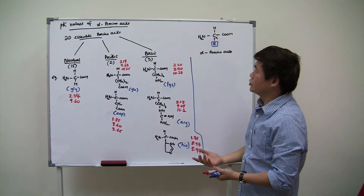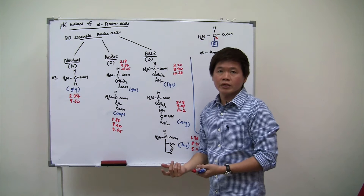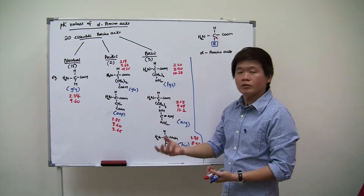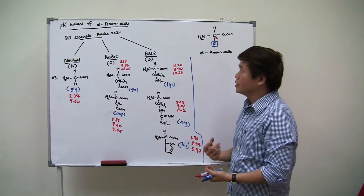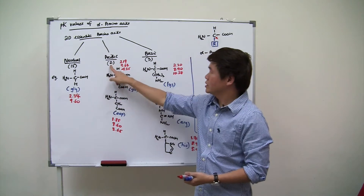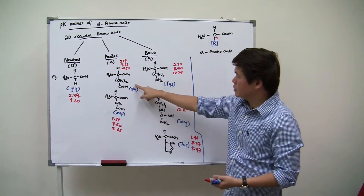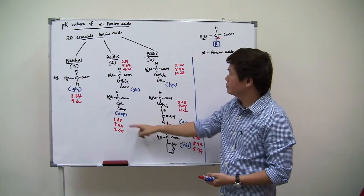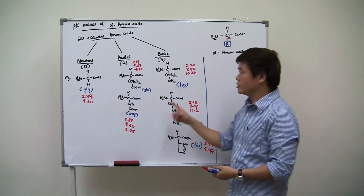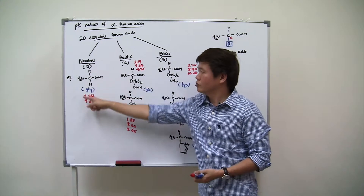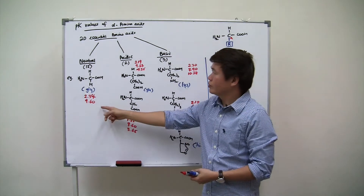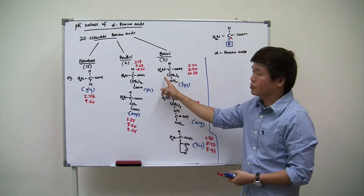There are 20 essential amino acids — amino acids that cannot be produced by the body but are essential for our health, so we consume them through food. All 20 are alpha amino acids. Out of these 20, two are acidic: glutamic acid and aspartic acid. Three are basic: lysine, arginine, and histidine. The remaining 15 are neutral amino acids. Now let's take a look at pKa values of neutral, acidic, and basic amino acids.